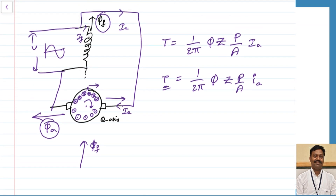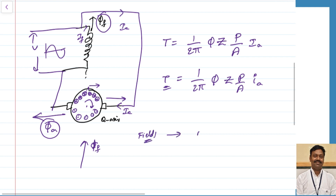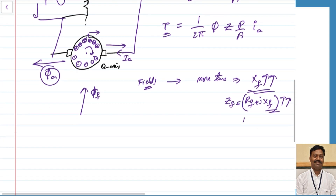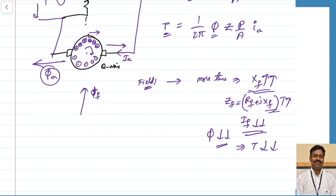The first thing is related to the field. The field has more turns, so whenever the turns are increasing, automatically the reactance of this field increases. When the reactance increases — because in the case of DC only resistance of the field is there, but here along with the resistance the reactance also adds — Z_f = R_f + j×X_f. So this impedance value increases drastically. If this value increases, automatically my field current will decrease drastically. When the field current decreases, automatically the flux becomes less. In the torque equation, if the flux decreases, automatically your torque will decrease. This is the first effect.